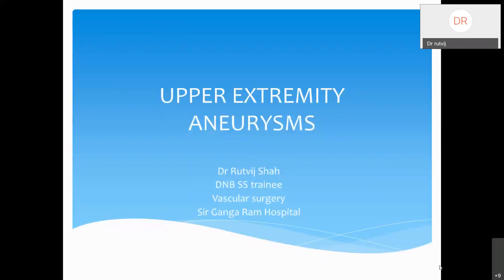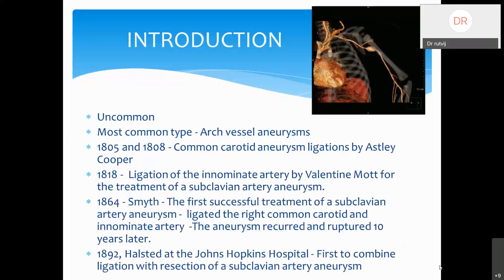Following the discussion on lower extremity aneurysms last time, today we'll be discussing upper extremity aneurysms. We won't be going into basics of what an aneurysm is or its etiology, as those have been covered multiple times already. Starting directly with the upper extremity: upper extremity aneurysms are pretty uncommon and there is a lot of paucity in the literature, so we don't have a lot of data.